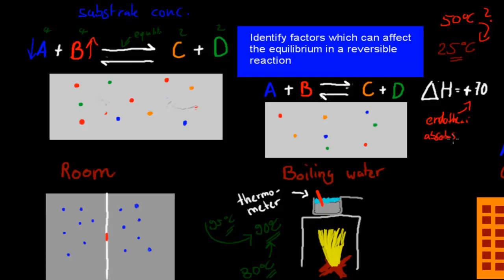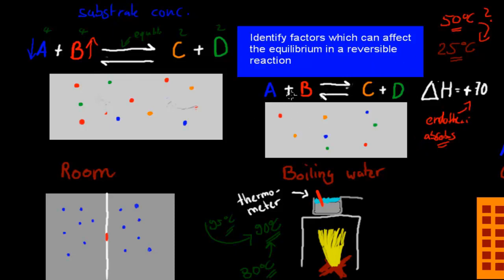So it absorbs energy. So in this case, if we have added more heat to the actual reaction and we want to bring that heat down, we can just make more C's and D's — because if we make more C's and D's, they will absorb that actual heat. So if we've added more heat, we want to reduce that heat, and this reaction, if we go from A and B to C and D, that will reduce the heat by absorbing heat itself. So if it's gone too high, we would have A and B colliding more often, reducing the amount of A and B and increasing the amounts of C and D, which reduces the temperature back to normal — back to 25 degrees Celsius.